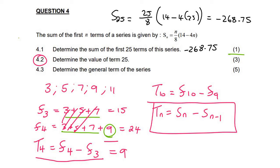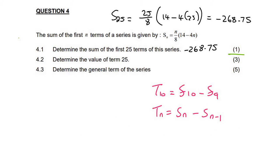So in question 4.2, there are one term 25. So we can say that term 25 is the sum of 25 minus the sum of 24.